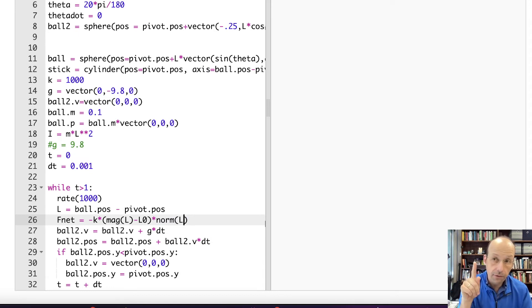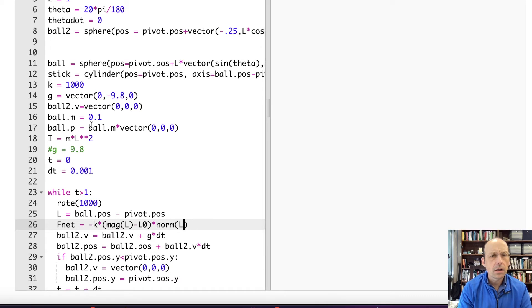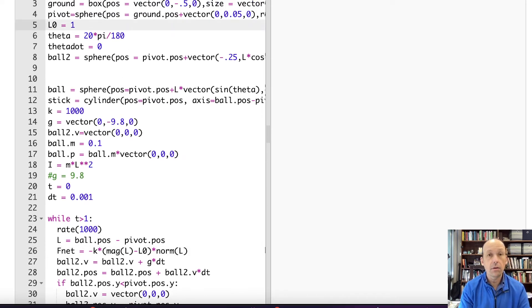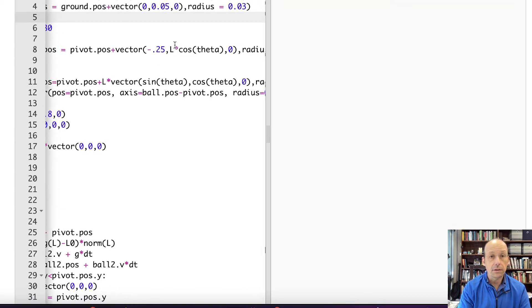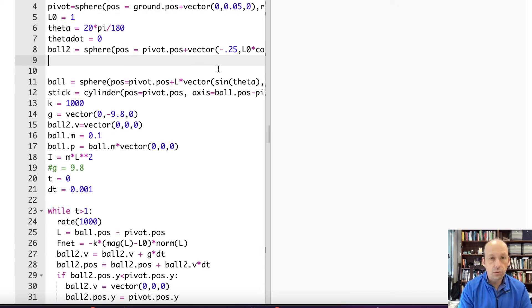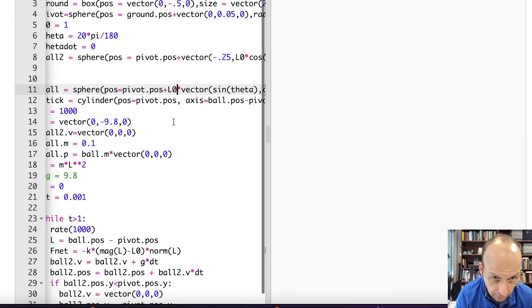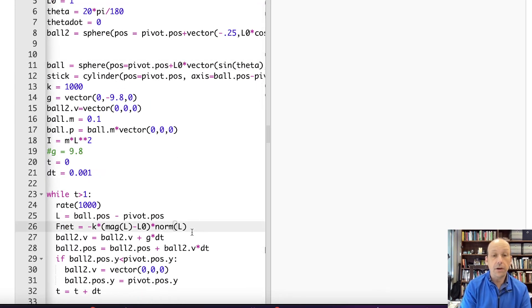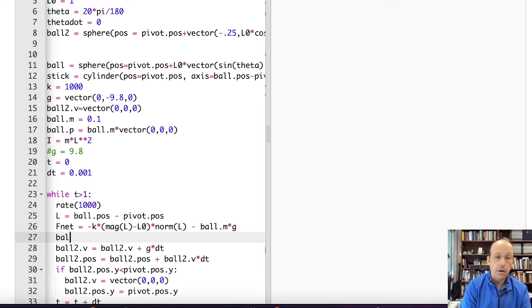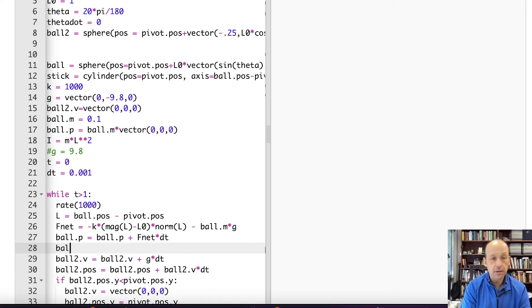Now that's the spring force. I need to also calculate the gravitational force. That's going to be ball.M times G. Now I'm going to use that to update the momentum. Ball.P equals ball.P plus F_net times DT. And now I can update the position. Ball.pos equals ball.pos plus ball.P times DT divided by ball.M. I think that should work.